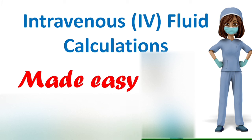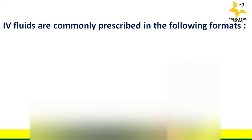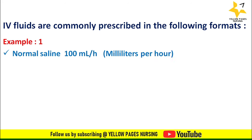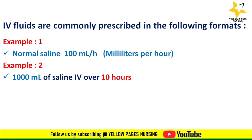IV fluids are commonly prescribed in the following formats. Example one: normal saline 100 ml per hour — here the volume and time are clearly mentioned: volume is 100 ml and time for infusion is one hour, so flow rate calculation is very easy. Example two: 1000 ml of saline IV over ten hours — here volume is 1000 ml but the time for infusion is ten hours.